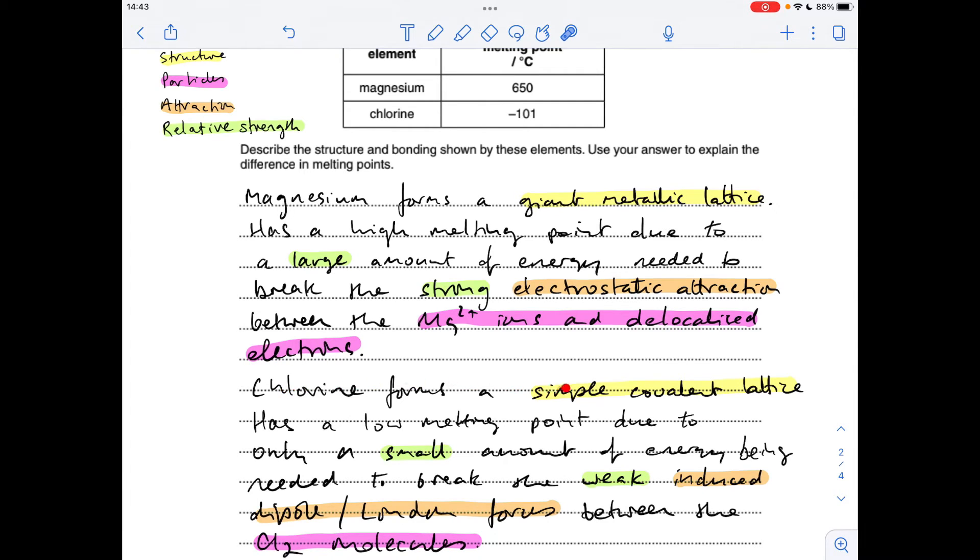Chlorine forms a simple covalent lattice. It's got a low melting point due to only a small amount of energy being needed to break the weak induced dipole or London forces between the chlorine molecules.